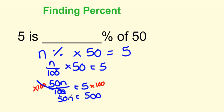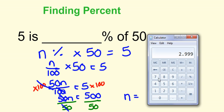Now, we still want to get n by itself. So what we can do is divide each side by 50. And what you do to one side of the equation, you have to do to the other. Now, my 50's are going to cancel out. I'm going to be left with n. And I have 500 divided by 50.